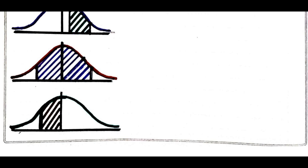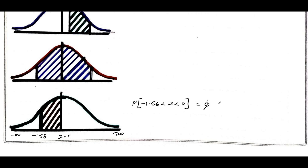Now we have a negative shade here, as the range is minus infinity to plus infinity. I will take minus 1.56 as the value with z equal to 0 here. So I need to find out the probability lying between minus 1.56 to 0, that is phi of minus 1.56.